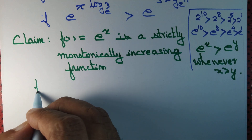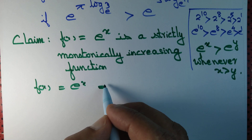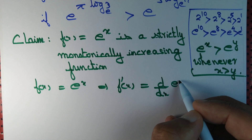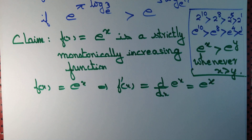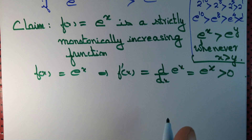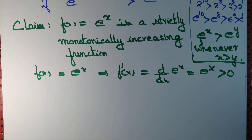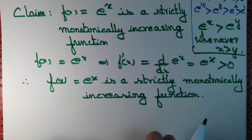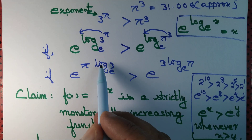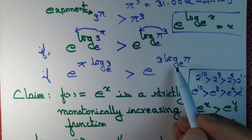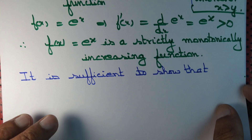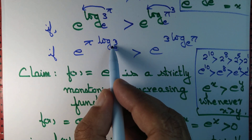More formally, f(x) = e to the power x is a strictly monotonically increasing function. We apply calculus: f'(x) equals the derivative of e to the power x, which is simply e to the power x, which is greater than 0. Since the derivative is positive, f(x) = e^x is strictly monotonically increasing. Therefore, it is sufficient to show that pi times log 3 is greater than 3 times log pi.